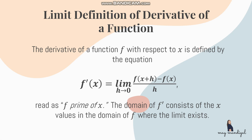The derivative of a function f with respect to x is defined by the equation: f prime of x is equal to the limit of f of x plus h minus f of x, all over h, as h approaches 0. The domain of f prime consists of the x values in the domain of f where the limit exists.